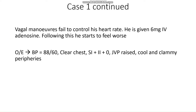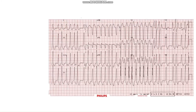Continuing with this case: let's say we perform vagal manoeuvres to treat the AVRT or AVNRT, and this does not work. The patient is then given six milligrams of IV adenosine, and he actually starts to feel worse. We can see he has become haemodynamically unstable — his chest is clear, his JVP is raised, and he's cool and clammy in the peripheries. This is what their ECG now looks like.